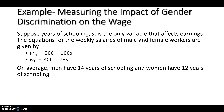Let's look at this using a numerical example. Suppose years of schooling, S, is the only variable that affects earnings — a simplifying assumption to keep things manageable. The equations for weekly salaries of male and female workers are determined using statistical regression methods. Suppose that male wages are determined by 500 plus 100 times years of schooling, and female wages are 300 plus 75 times years of schooling. On average, men get 14 years of schooling and women have 12 years of schooling.